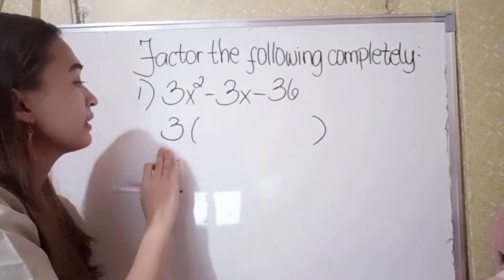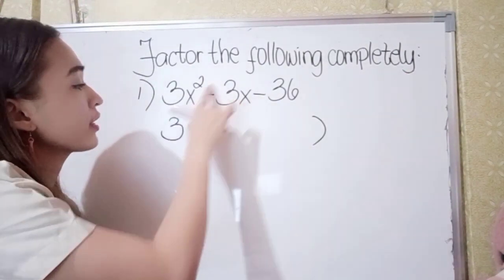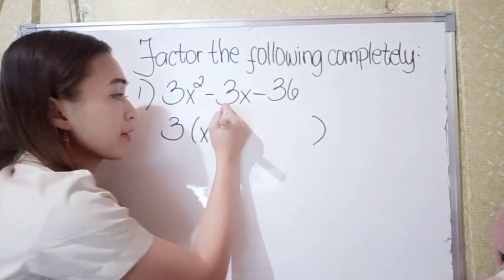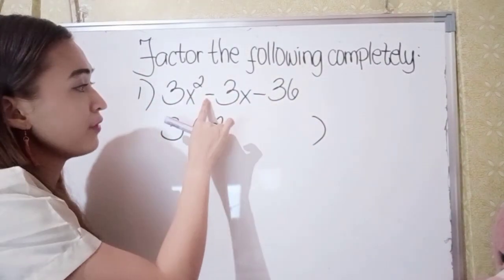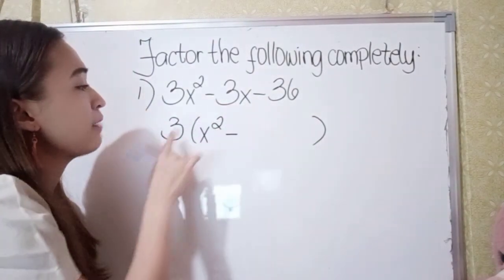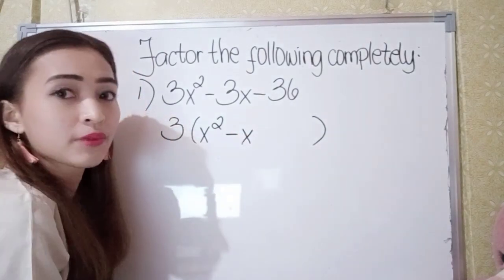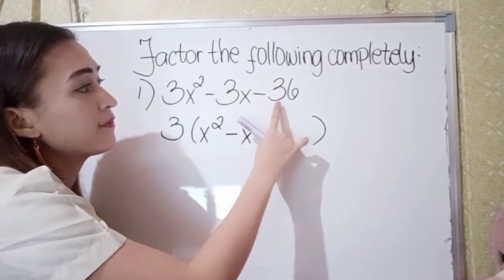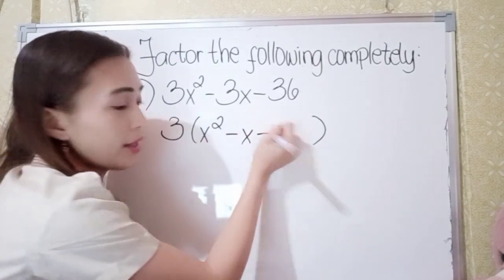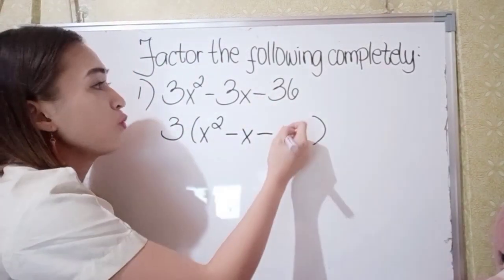So, 3x squared divided by 3 is x squared. Next, put a negative sign — 3x divided by 3 is x. Next, negative 36 divided by 3 is 12, so put negative: negative 36 divided by 3 is 12.